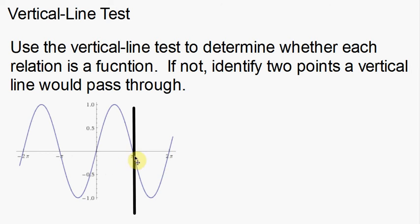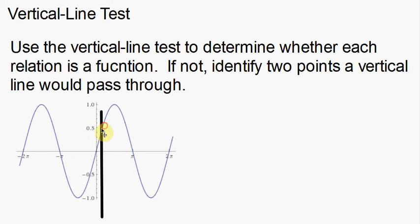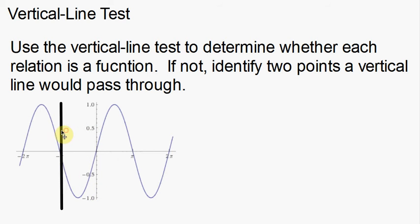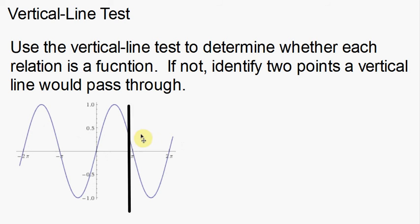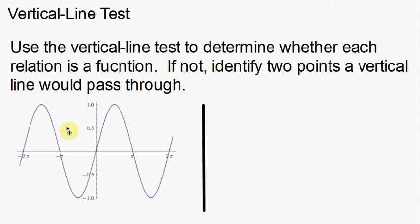You'll see the graph is only hitting at one point. It doesn't matter how far we go, we still just intercept at just this one point. We're intercepting one point right here, and as I keep moving, intercepting one point here right at the tip top, still just only intercepting at one point. It looks like no matter where I put this vertical line, I don't intercept at two different points. Since I don't intercept at two different points, this is a function.